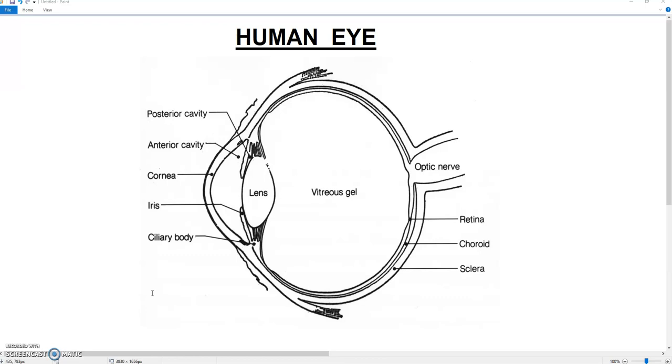In this video lecture I will totally focus on structure and functions of various parts of the human eye. The first point I want to tell you is that it is a spherical structure which is present in bony sockets of the skull.